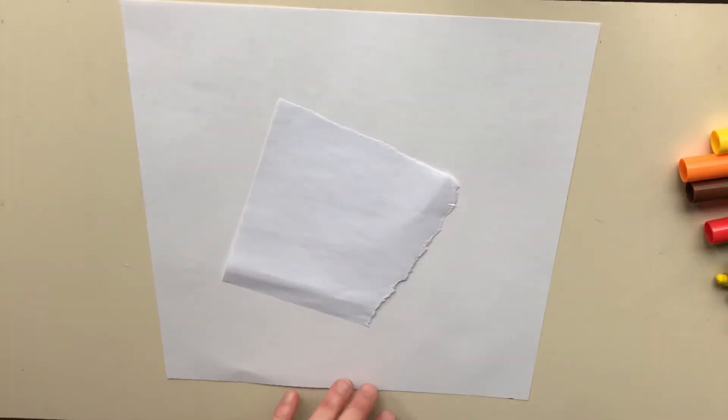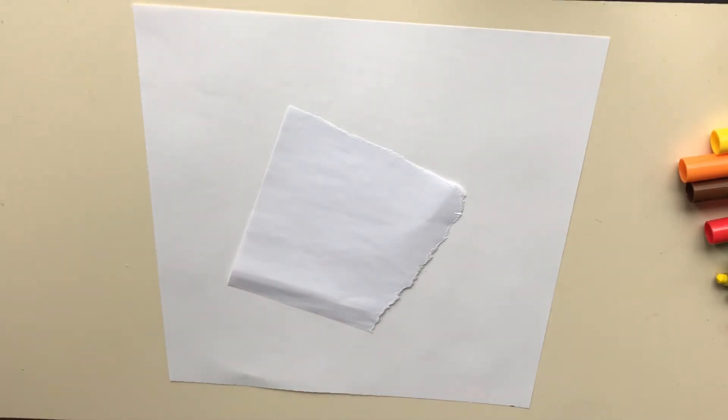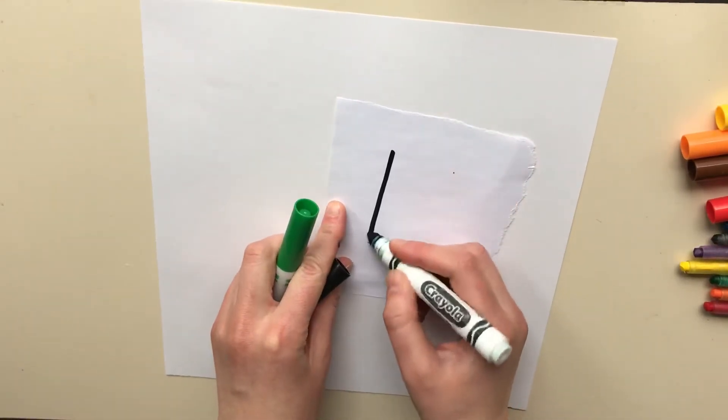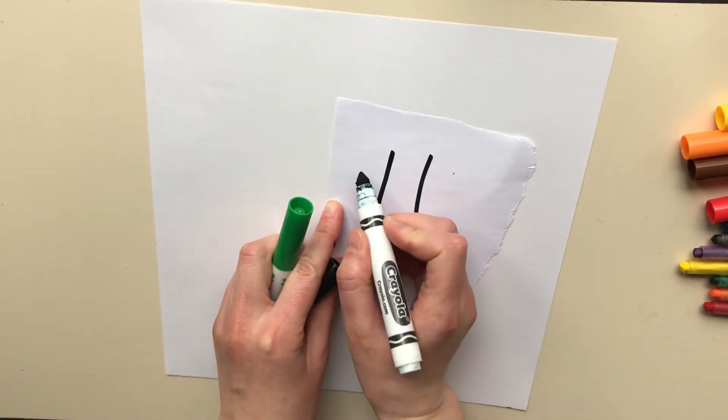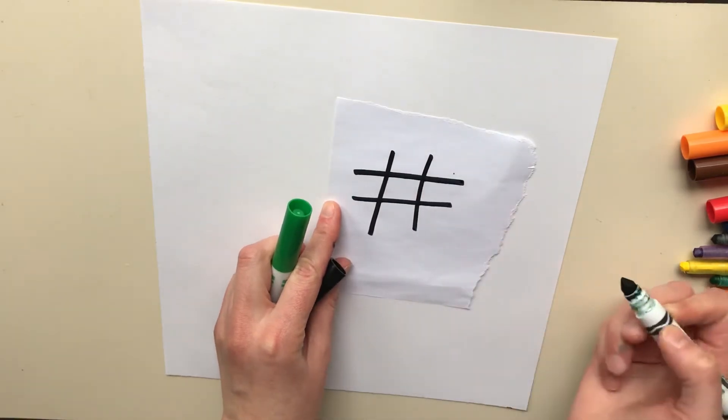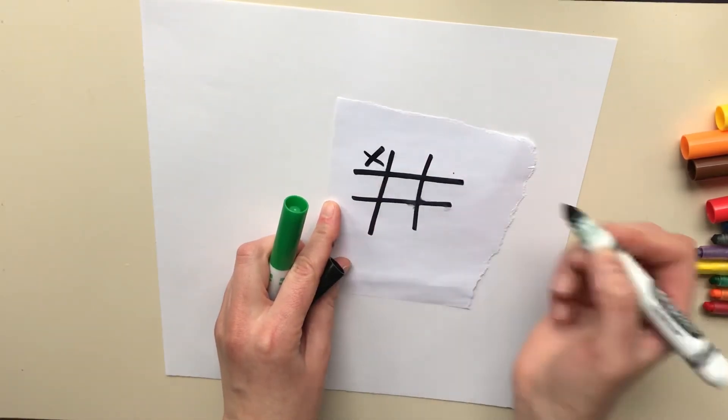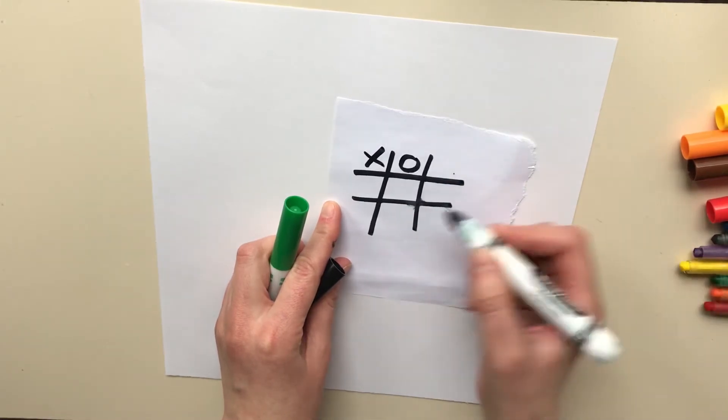So the second game we're gonna play is called tic-tac-toe. And you've probably played it before. But if you never have, you can ask one of your older siblings or one of your parents to show you how to play because it's pretty easy and almost everyone knows how to play. So usually when people play tic-tac-toe, they just kind of draw like two straight lines and then two horizontal lines. And then you take turns drawing X's and O's. And you want to get three in a row.